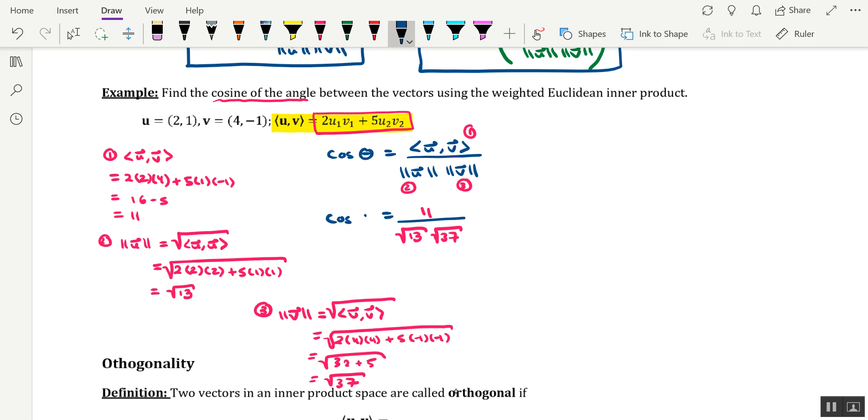Okay, so this is the cosine of the angle theta. And this would be acceptable as one version of the answer. Of course, if you wanted to, you could combine the radicals that are in the denominator. So I'll say a.k.a. cosine theta equals 11 over the square root of 481.